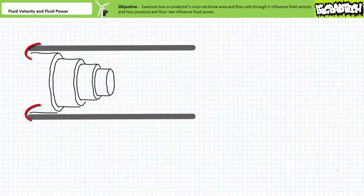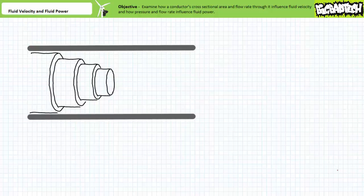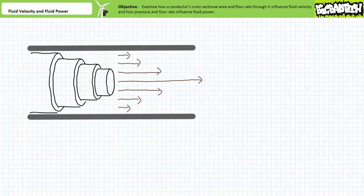Given ideal conditions, those particles in contact with the interior wall of a straight length of conductor will be subject to more friction and as a result move slower than those in the center. This leads to a velocity profile such that the thin layer of fluid adhering to the stationary surface is creeping along, while velocity increases as we move toward the center. This type of smooth layered flow is known as laminar flow — laminar meaning sheet-like, where each layer has its own velocity and they do not interfere with one another.